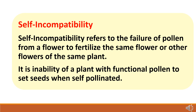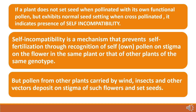Self-incompatibility is a method which induces cross-pollination and is used in hybrid seed production. It refers to the failure of pollen from a flower to fertilize the same flower or other flowers of the same plant. Self-incompatible pollen grains fail to germinate on the stigma of the flower that produces them. It is the inability of a plant to set seeds through self-pollination due to genetic or biochemical factors, and it is the condition where a plant is unable to produce a zygote after self-pollination. If a plant doesn't set seed when pollinated with its own functional pollen but exhibits normal seed setting when cross-pollinated, it indicates the presence of self-incompatibility.